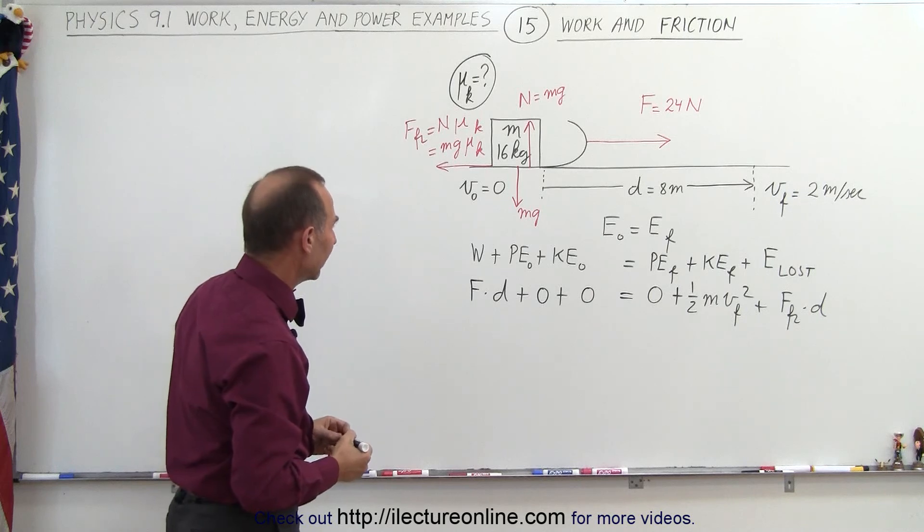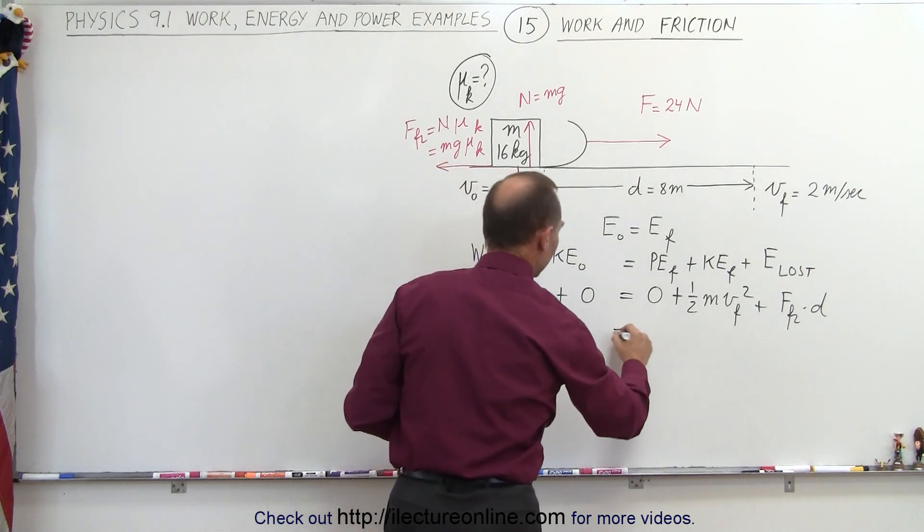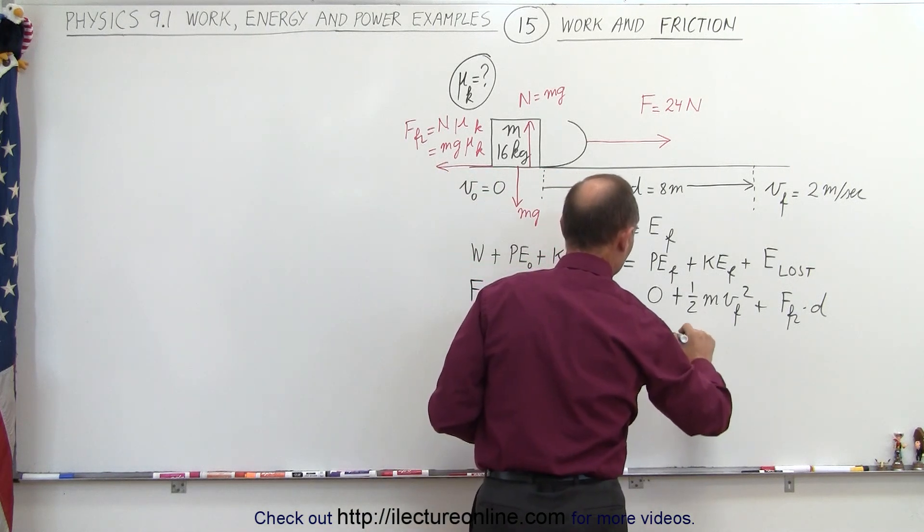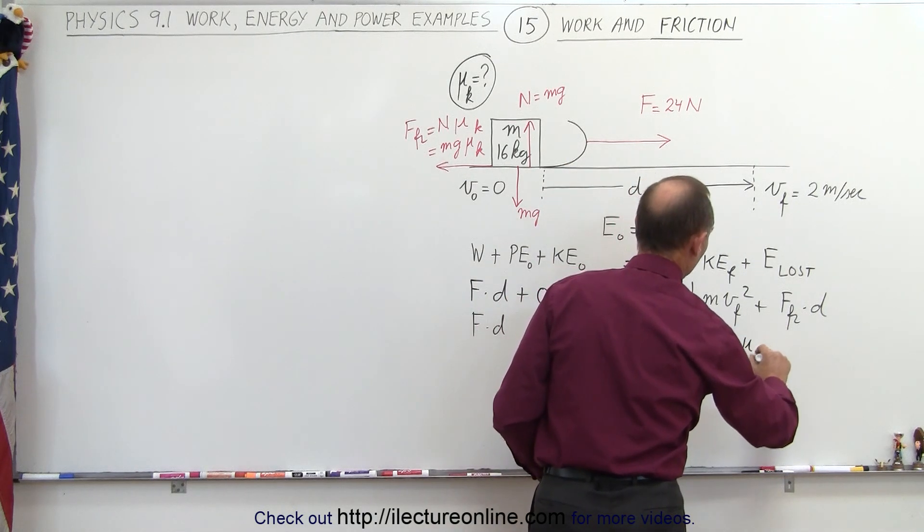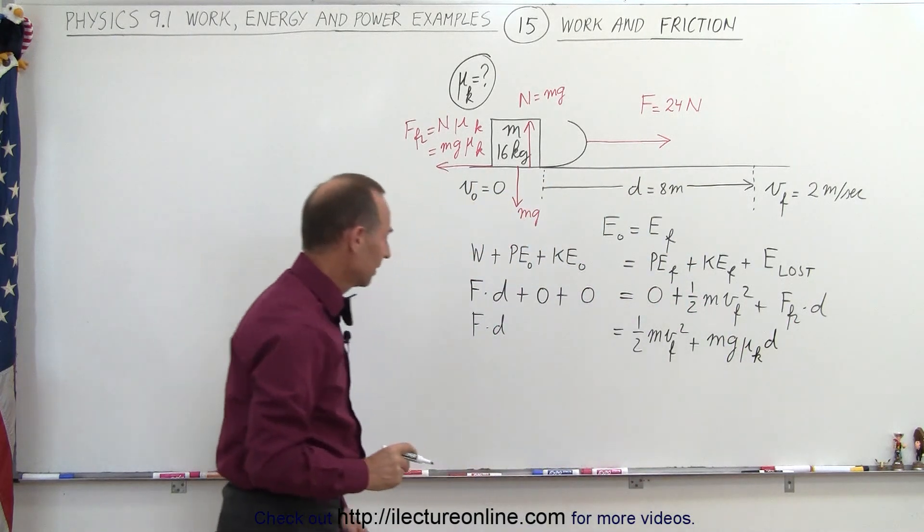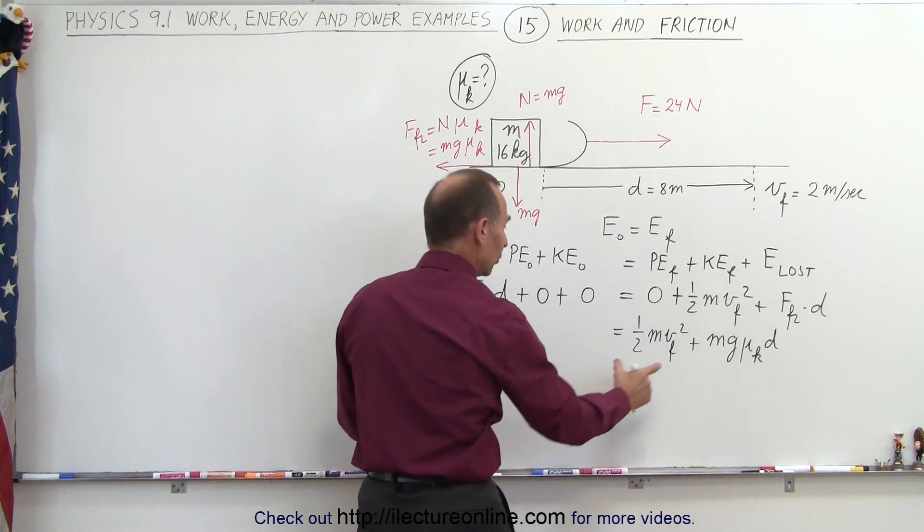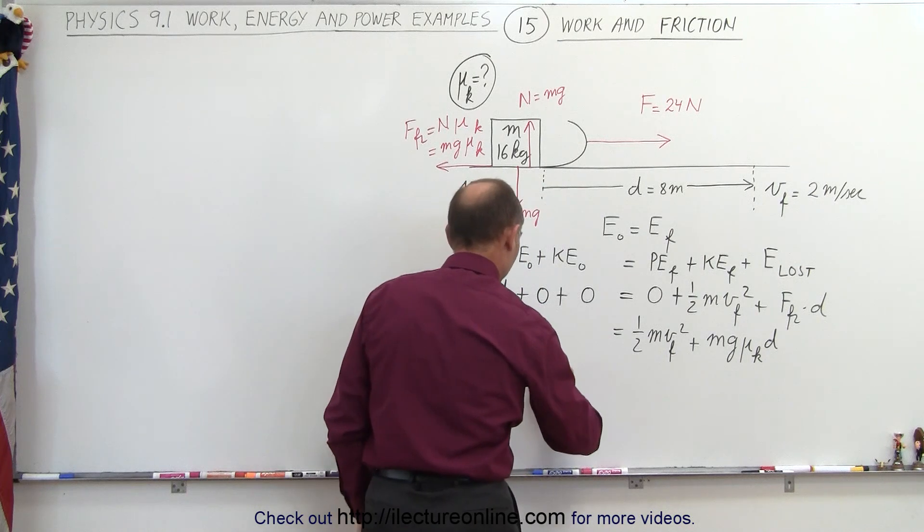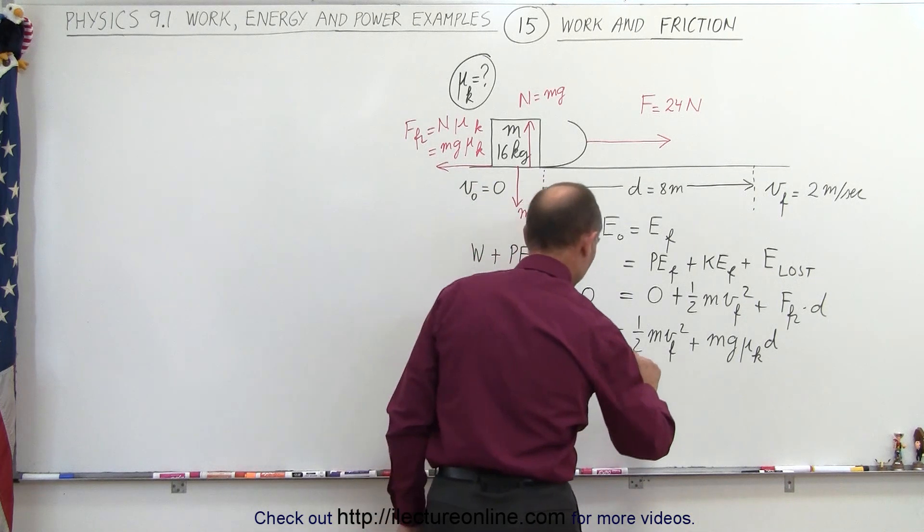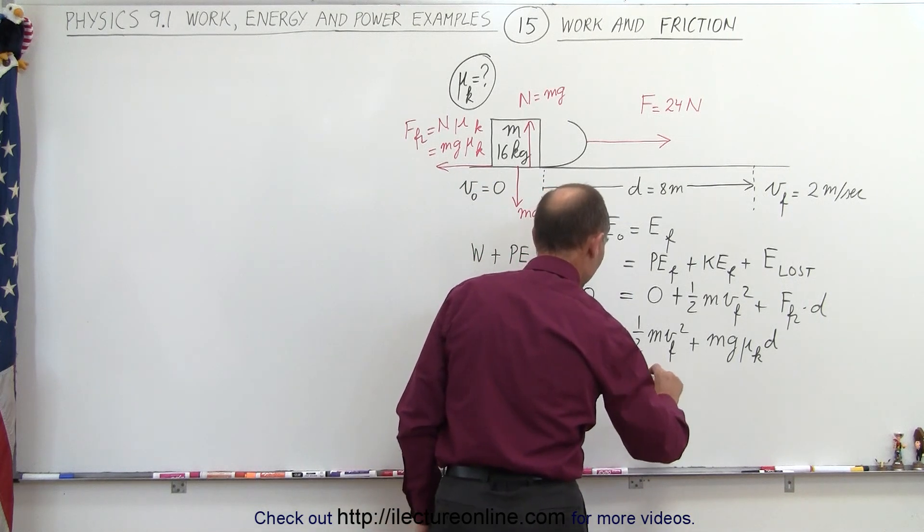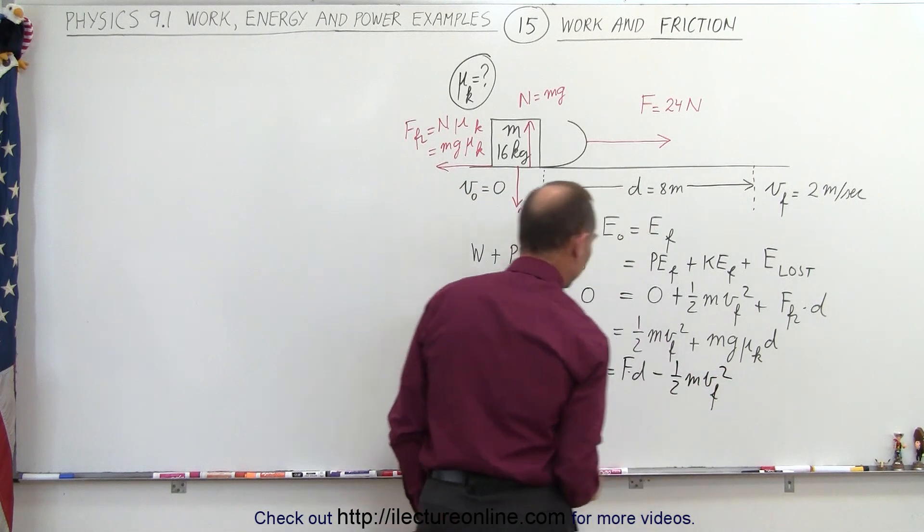All right, let's go ahead and put all that in. So we have force times distance equals one half m v final squared plus the friction force, which is mg mu sub k times d. We're trying to find mu sub k here. So what we're going to do is move this across, turn the equation around. So we have mg mu sub k times d equals, on the other side, f times d minus, when we bring the kinetic energy across, one half m v final squared.